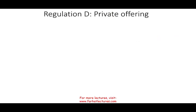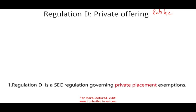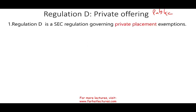Regulation D — when you think of Regulation D, think of private placement or private offering, in contrast to public. The SEC's main objective under the 1933 Act is regulating initial public offerings when you sell to the public. But under Regulation D, what if you don't want to sell to the public? You want to sell to people you know, people you are familiar with. It's a private placement. Regulation D governs private placement exemptions.